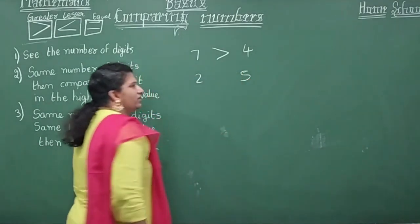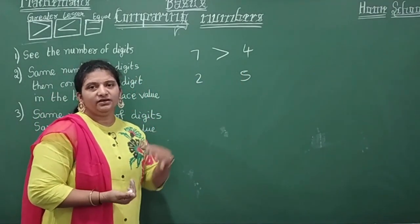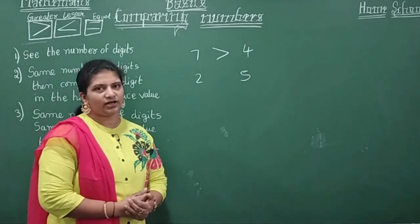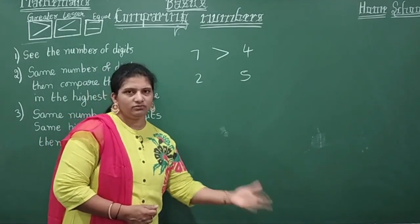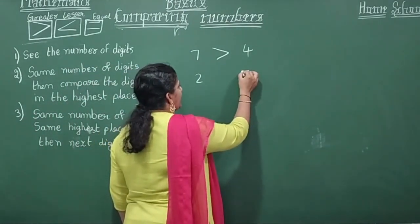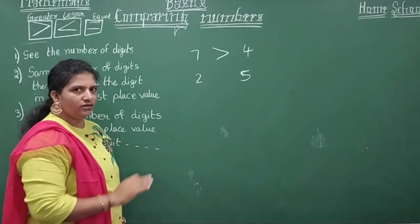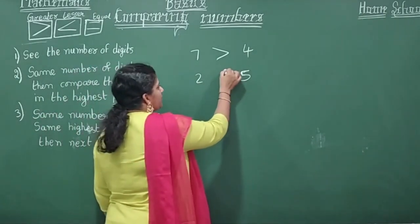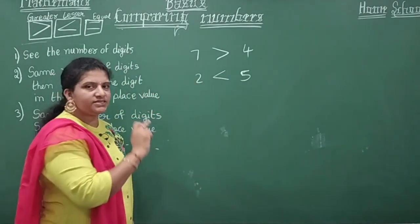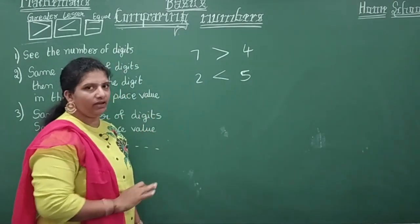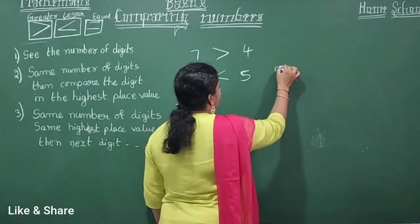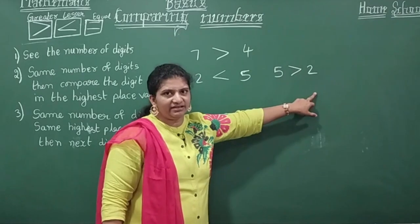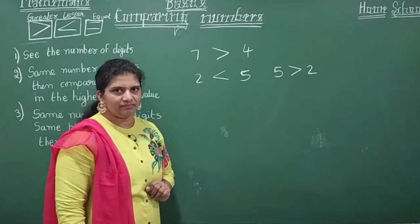Here we have two and five. Suppose you have two chocolates and your brother has five chocolates. What do you say? 'Mummy, I have less chocolates!' — and your brother has more. So how do you write this? You can use any symbol. You can say 'two is less than five,' or you can apply the opposite: 'five is greater than two.' Both statements are correct.